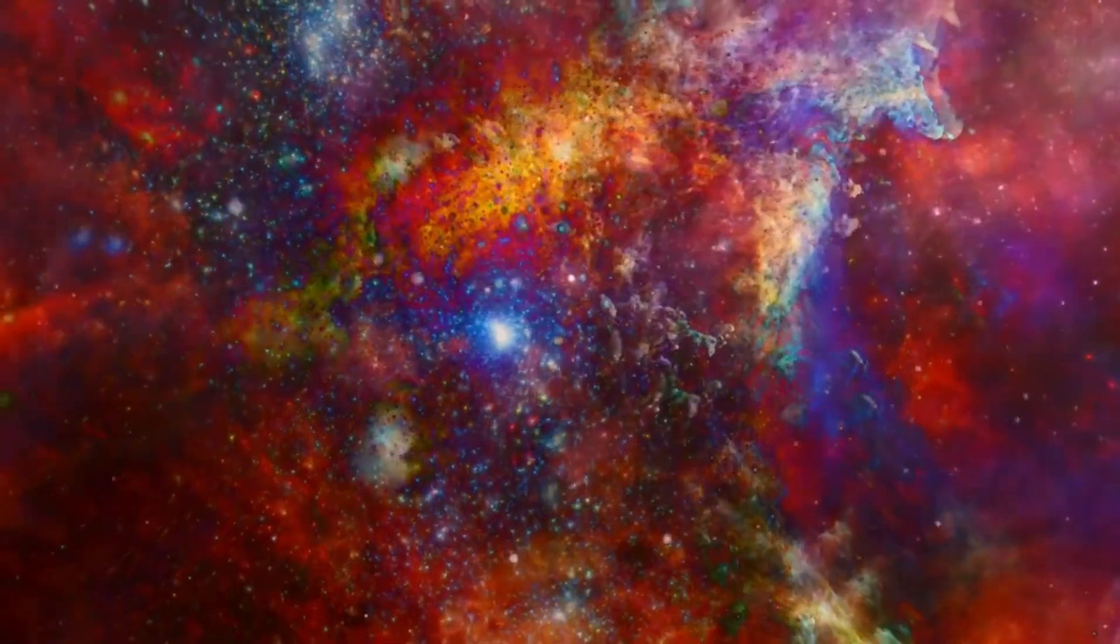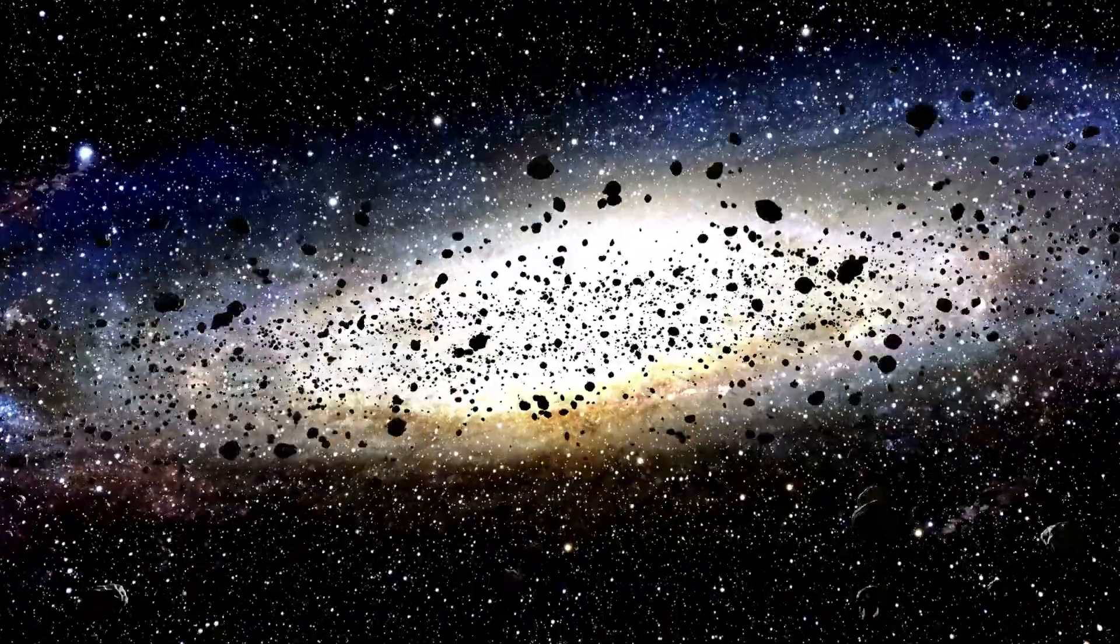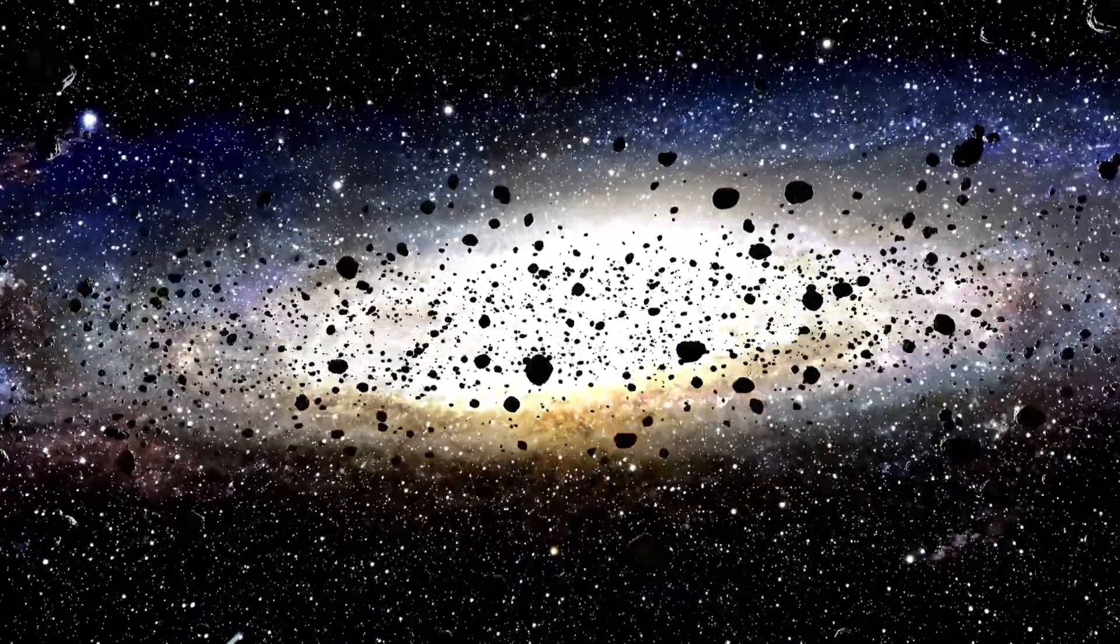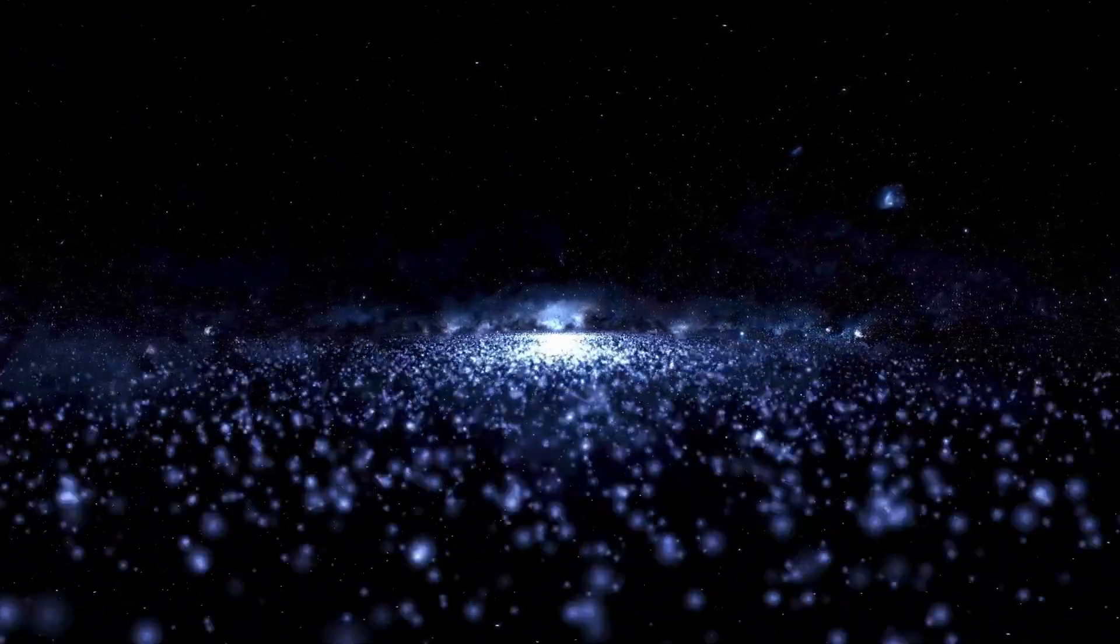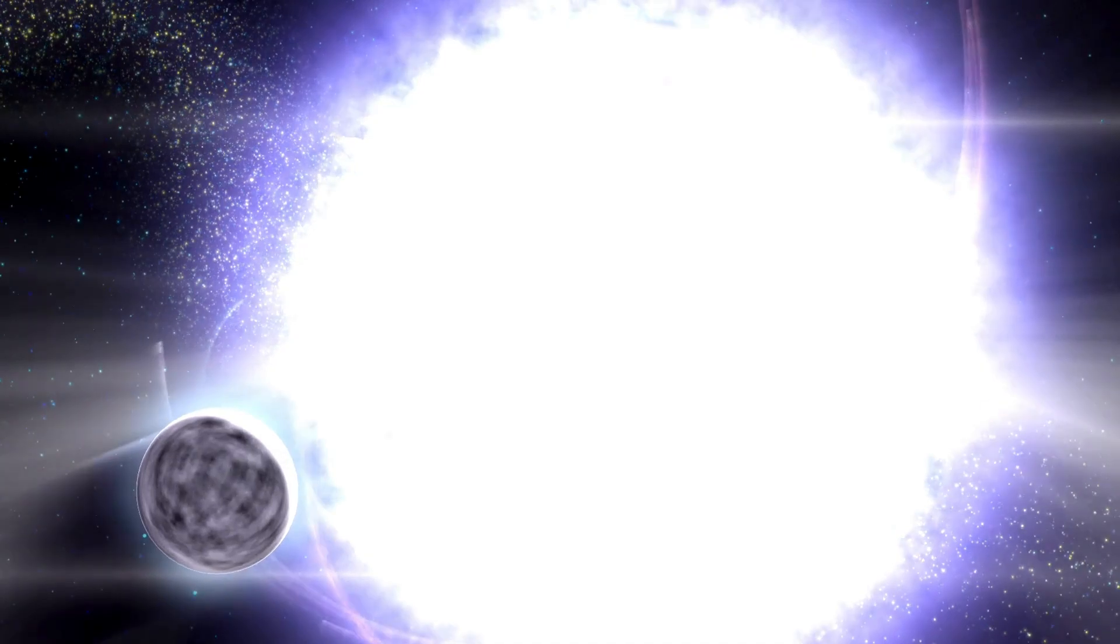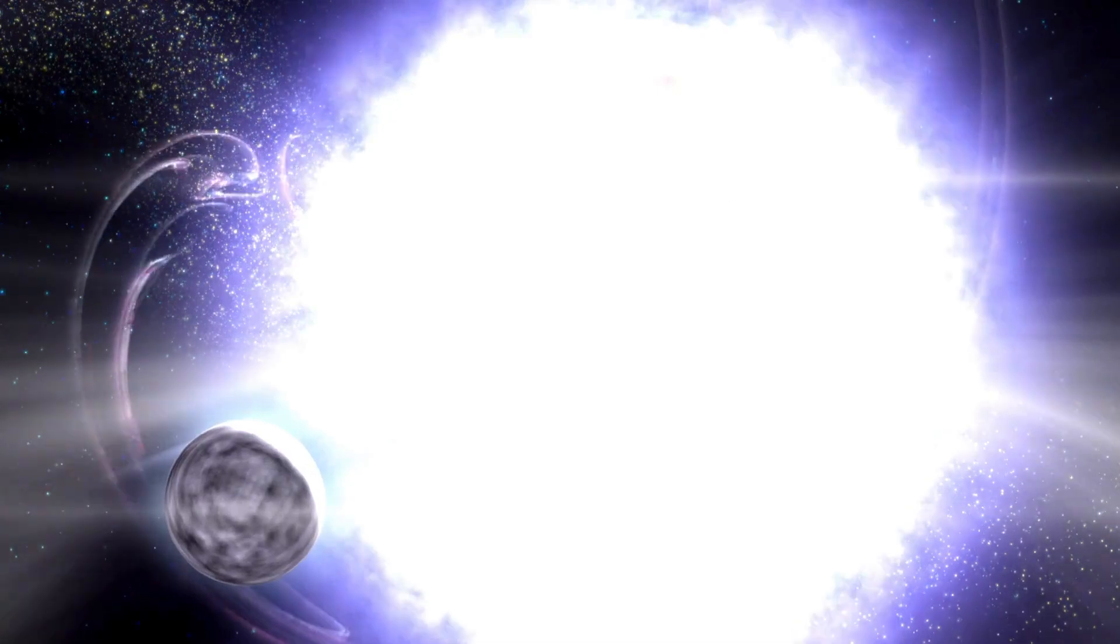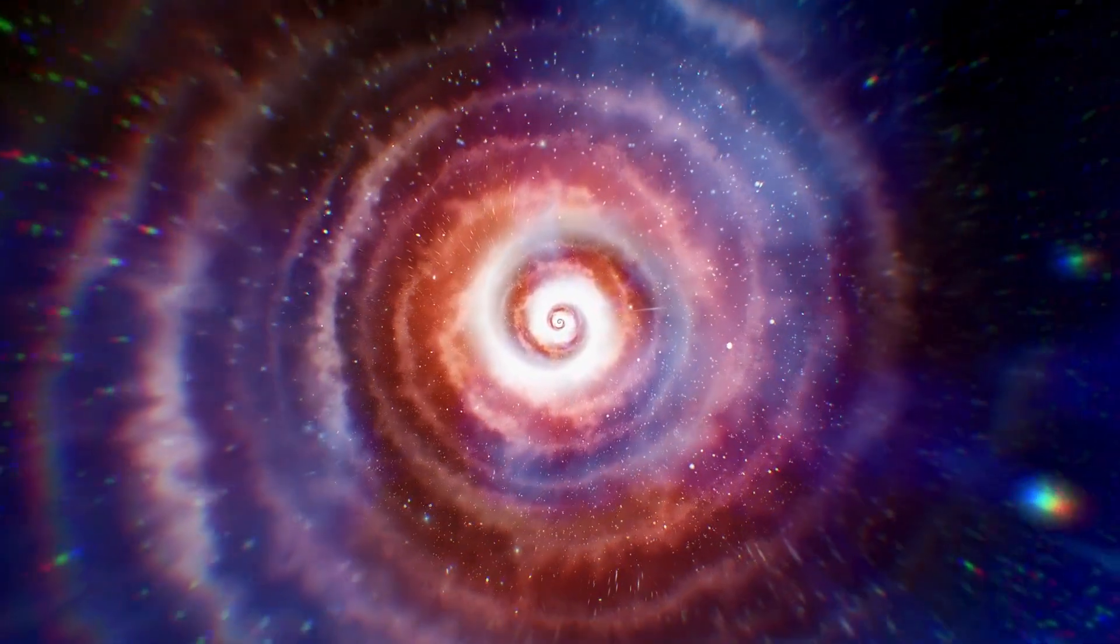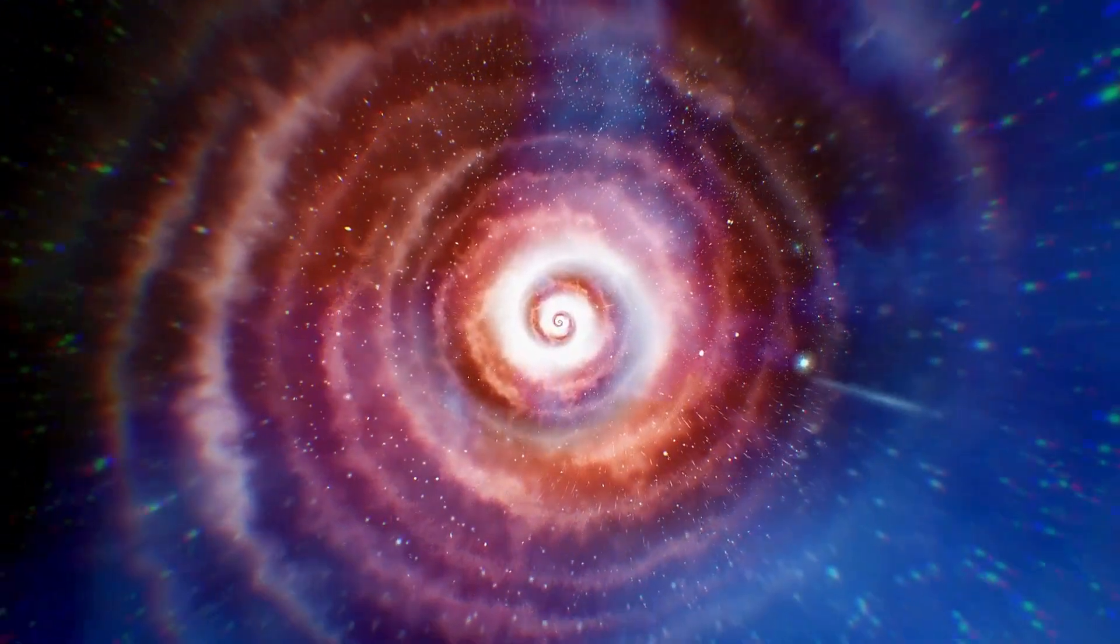When Betelgeuse explodes, it will emit a wide range of radiation, from visible light to gamma rays. One of the most crucial aspects of the supernova will be the flood of neutrinos, the elusive subatomic particles that rarely interact with matter. Neutrinos from a supernova can actually reach Earth before the light from the blast due to their ability to pass through almost everything without being affected. Observatories like Japan's Super-Kamiokande and the IceCube Neutrino Observatory in Antarctica are preparing to detect these neutrinos, providing an early advantage in monitoring Betelgeuse's final moments.